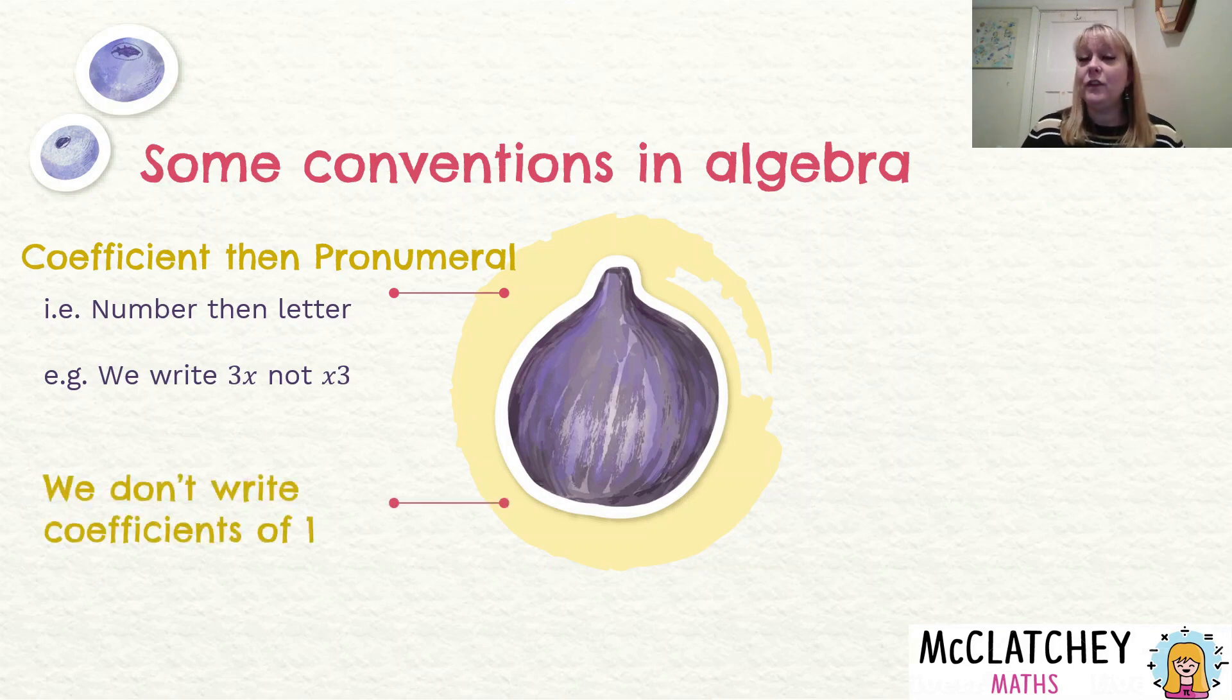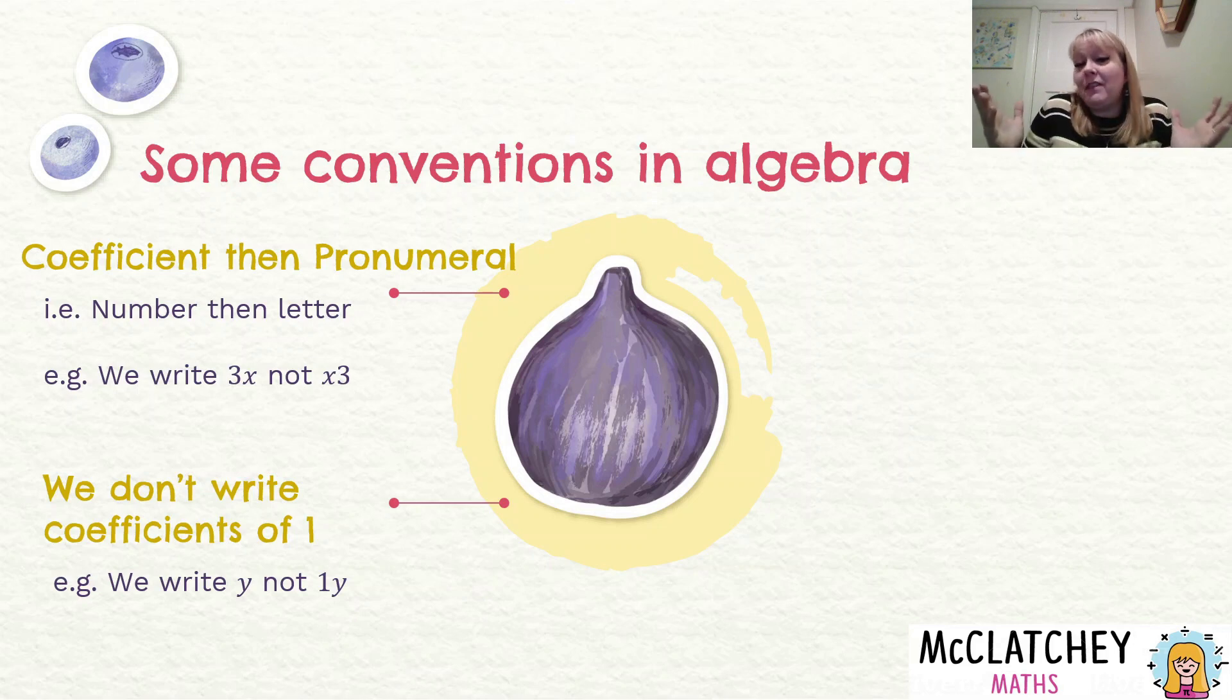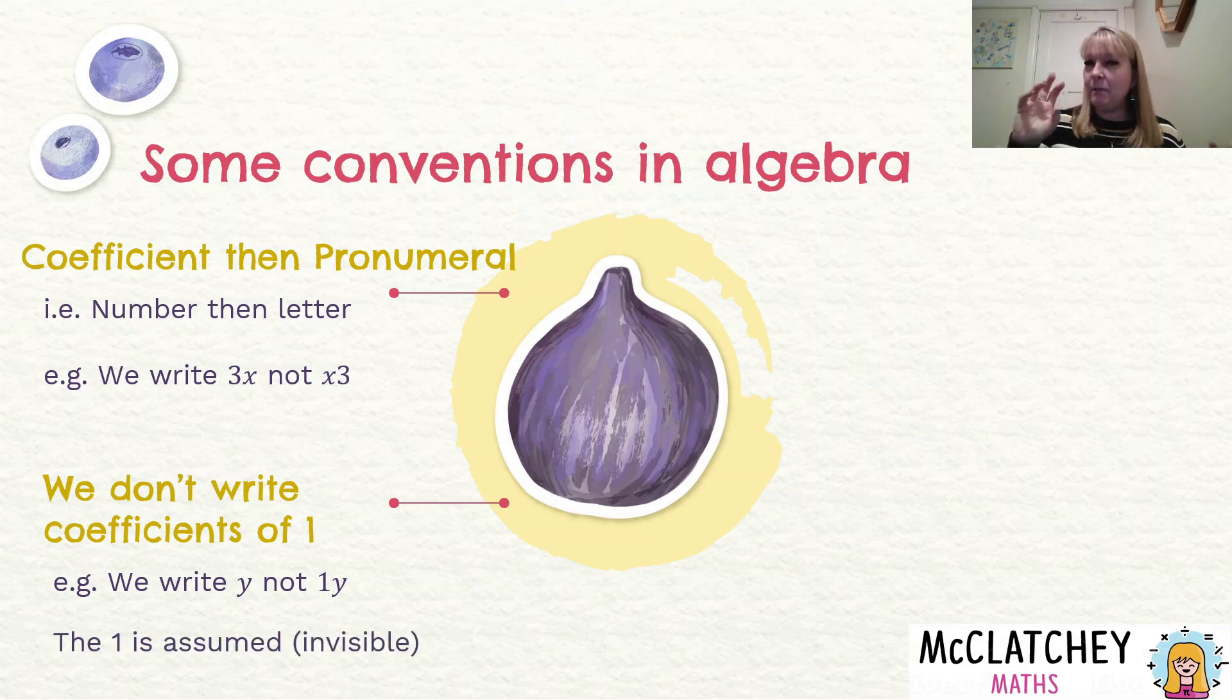Now, we don't write coefficients if the coefficient is one. So if the number in front of the letter is the number one, we would just write the letter by itself and not one in front of it. You're not technically wrong if you write one y. But we just like to save time in mathematics. So we just write the letter y. And it's assumed that you know that that one is invisible. And that if it's a single y all by itself, it's just one y.